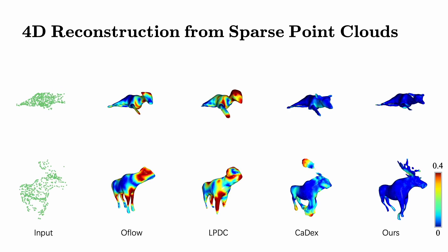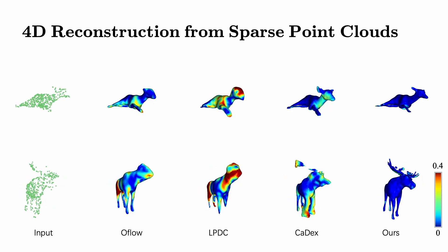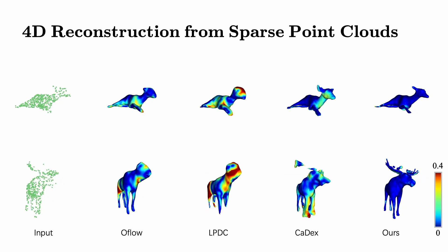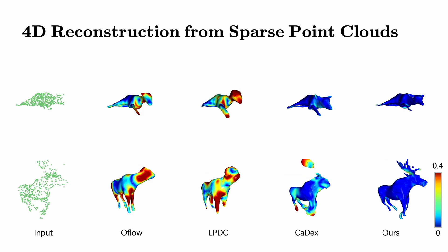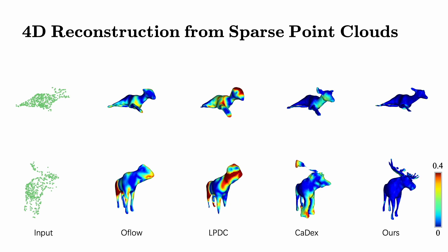We also conduct comparisons on the Deforming Things 4D animal dataset that has many animals with various topologies. Our method demonstrates its superiority in accurately reconstructing shapes and tracking motion.